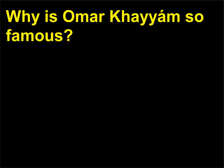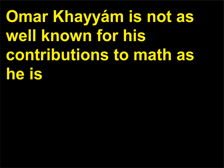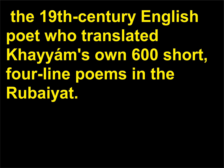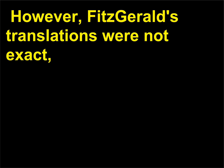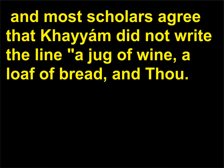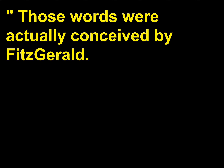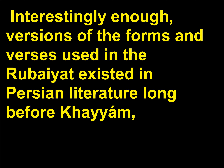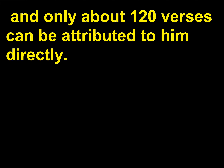Why is Omar Khayyam so famous? Omar Khayyam is not as well known for his contributions to math as he is for being immortalized by Edward Fitzgerald, the 19th-century English poet who translated Khayyam's own 600 short four-line poems in the Rubaiyat. However, Fitzgerald's translations were not exact, and most scholars agree that Khayyam did not write the line 'a jug of wine, a loaf of bread, and thou' — those words were actually conceived by Fitzgerald. Interestingly, versions of the forms and verses used in the Rubaiyat existed in Persian literature long before Khayyam, and only about 120 verses can be attributed to him directly.